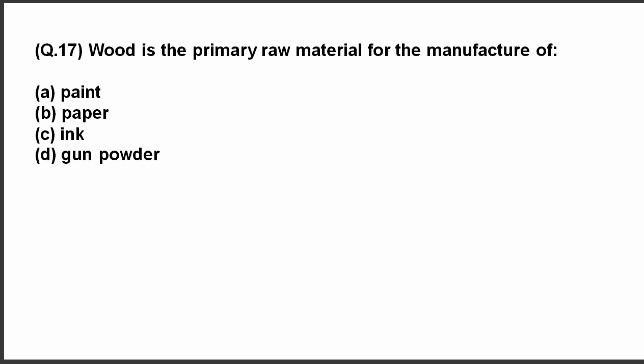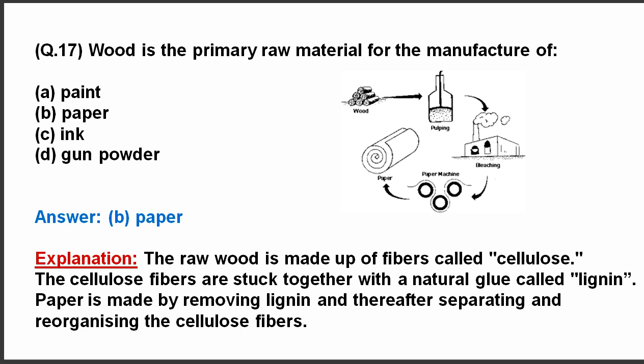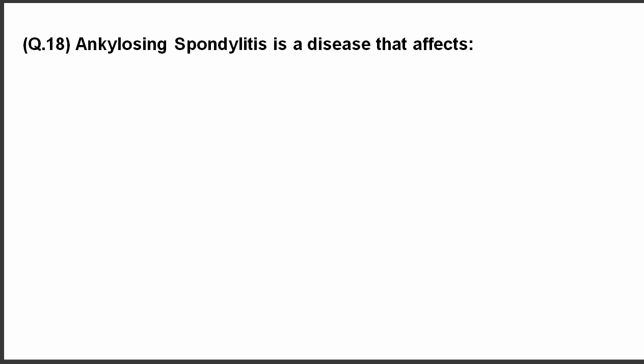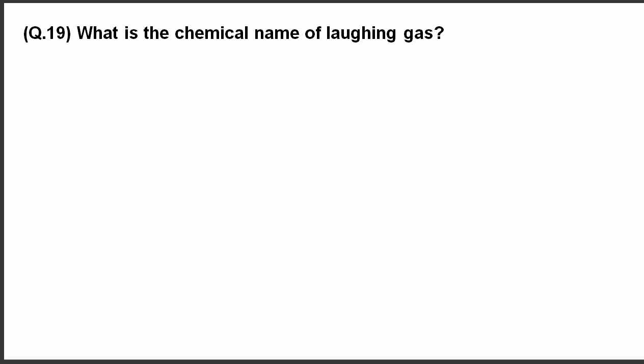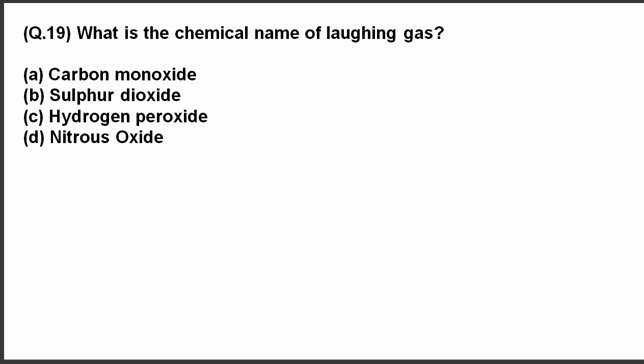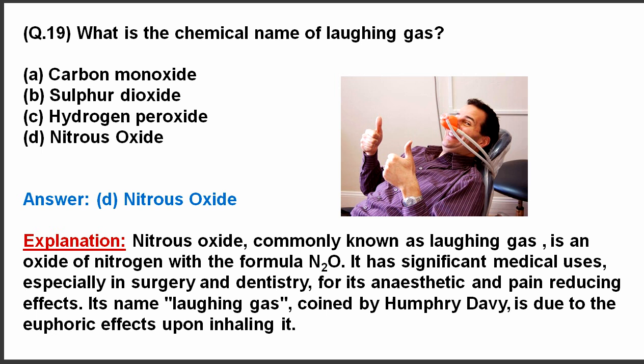Moving on to the next question. Wood is the primary raw material for the manufacture of? The correct answer is paper. Question number 18. Ankylosing spondylitis is a disease that affects? Here are the options. And the correct answer is spinal column. Next question. What is the chemical name of laughing gas? Here are the options. The correct answer is nitrous oxide.